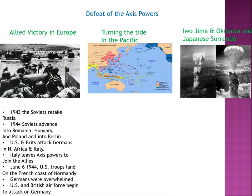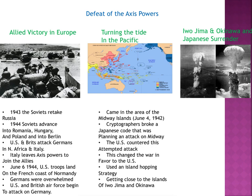On June 6th, 1944, U.S. troops landed on the French coast of Normandy, and the Germans were overwhelmed by all the soldiers there. Having to fight on two fronts, the U.S. and British Air Force began attacking Germany as well. This pretty much brought Germany to a point where they were being closed in on both sides and their territory contracted, ending the German conquest.